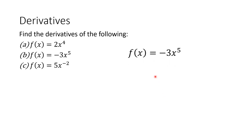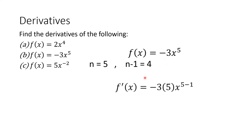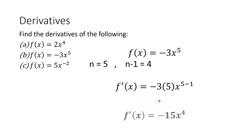For the function f(x) = −3x raised to 5, our n equals 5, so n minus 1 equals 4, and the coefficient is −3. Therefore f prime of x equals −3 multiplied by 5, with x raised to 5 minus 1. So f prime of x = −15x raised to 4.